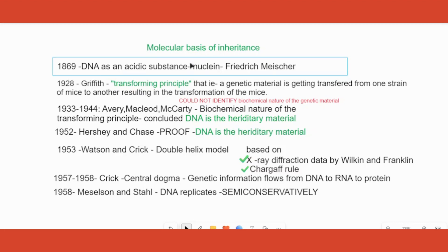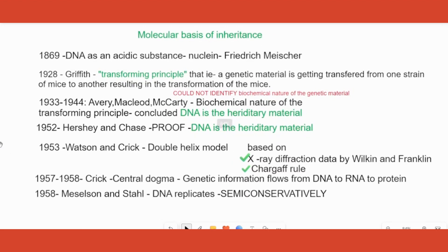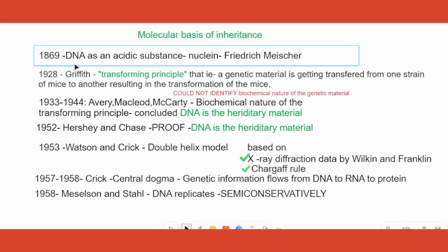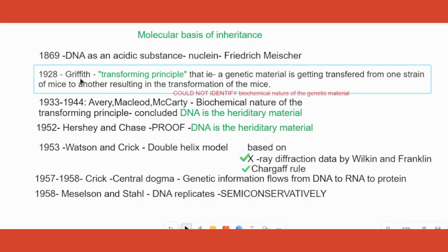Frederick Miescher just identified DNA as an acidic substance — nothing more. He never considered it as a genetic material; he just understood that it is an acidic substance. It was around the 1920s onwards that many experiments were done referring to something called genetic material. The first set of experiments were done by Griffith, called the mice experiment.